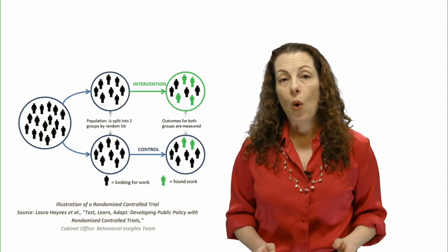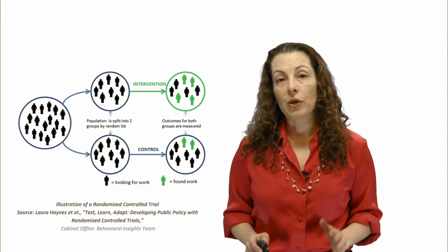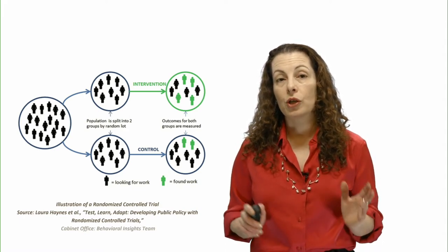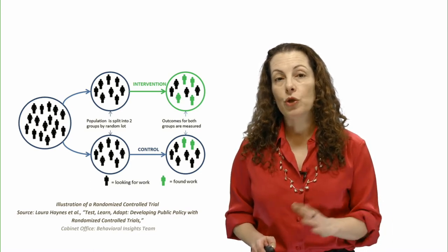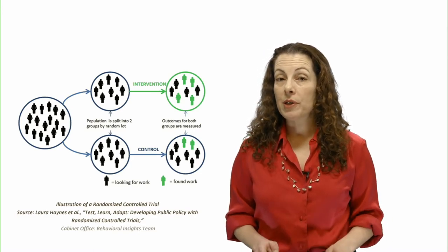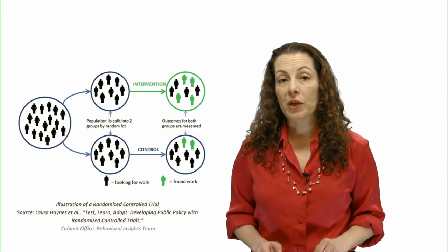In an RCT, one group of individuals, called the treatment group, receives an intervention, and the other, the so-called control group, does not. People are randomly assigned into one of the two groups, and ideally, neither participants nor the researchers know who is in which group.